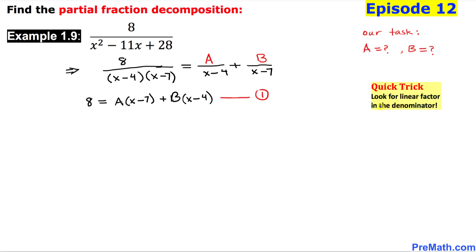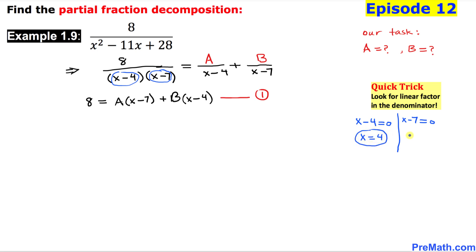Here is our quick trick: look for the linear factors in the denominator. We have two linear factors: x minus 4 and x minus 7. I am going to set both of them equal to 0. That means x is going to be positive 4 as one of our x values, and x equals positive 7 as another x value.